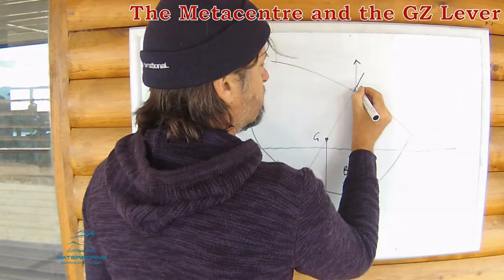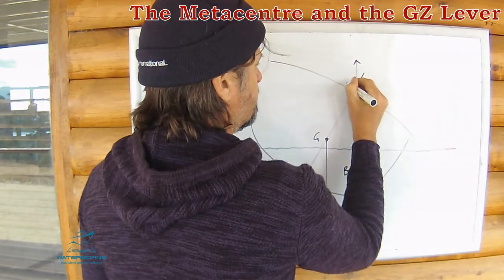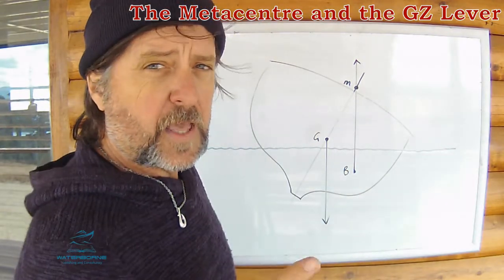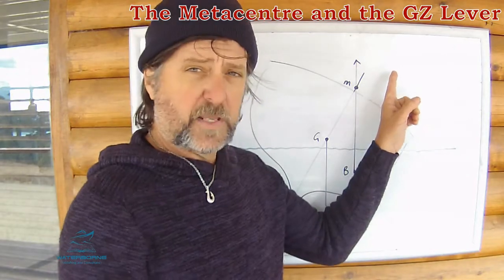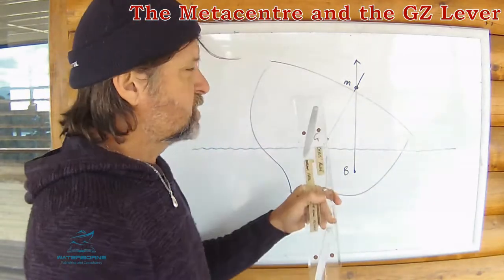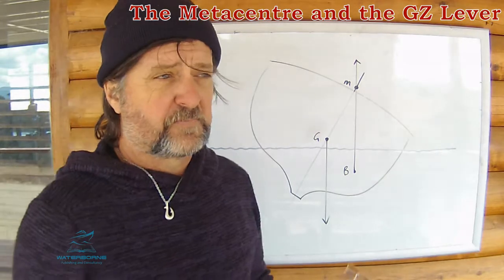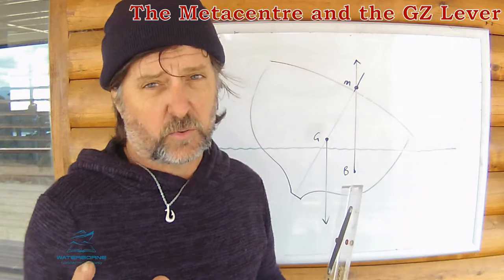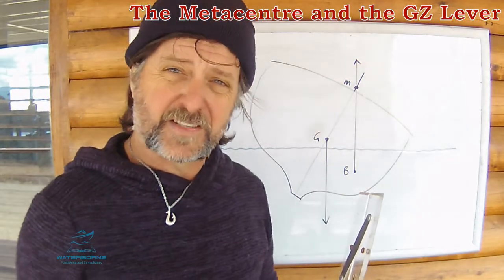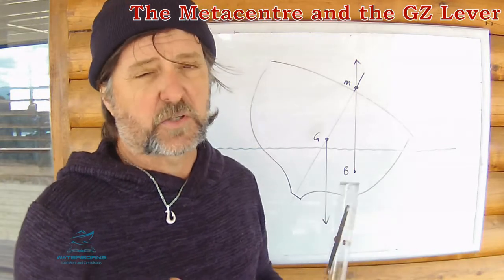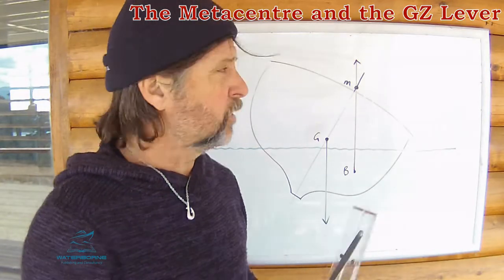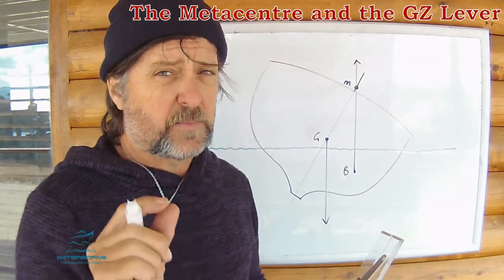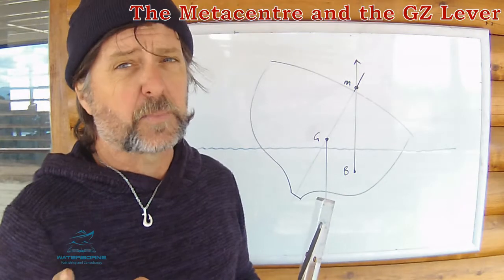That point, designed in by the naval architect — it's not just some random thing — we're going to call M, and M stands for Meta Centre. Now the position of this Meta Centre can actually move. But under small angles of inclination or heel, below about 8 degrees, the Meta Centre can be assumed to stay put. At greater angles of heel, the Meta Centre tends to move a little bit and stability becomes more complex.